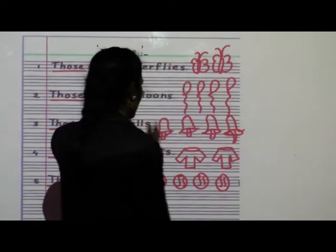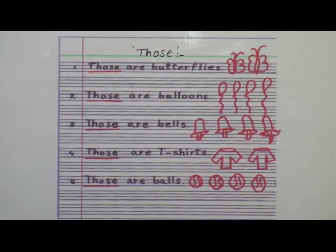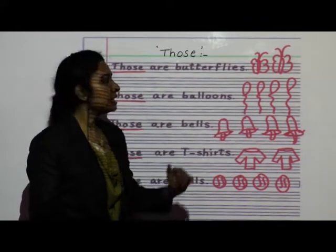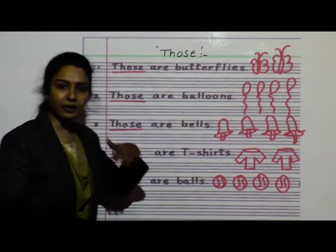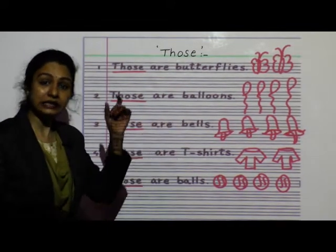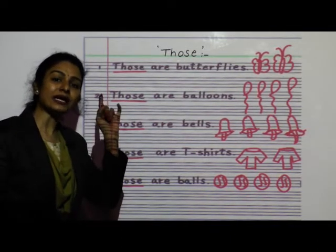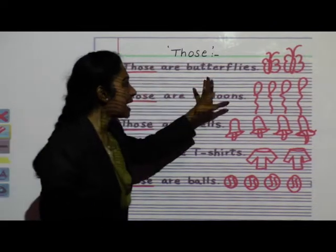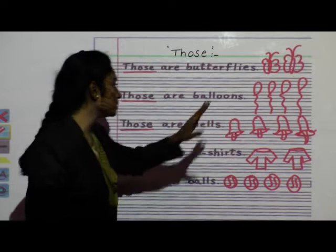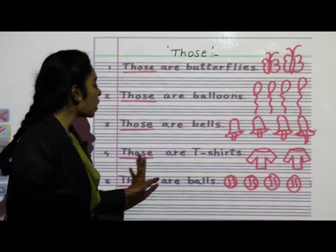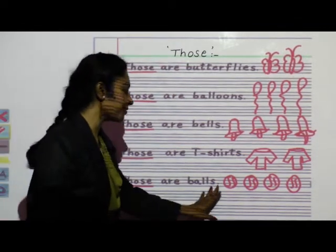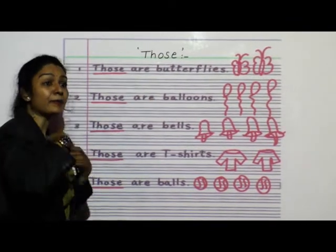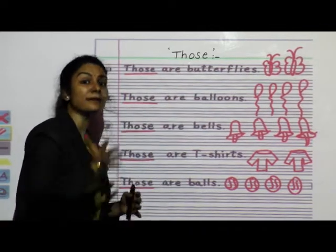Why have we used 'those'? Because all these things are far from us. Woh humse door hain. When I say 'those are butterflies,' I am pointing — it means that thing is far from me, far from us. Those are balloons — the balloons are far from us.